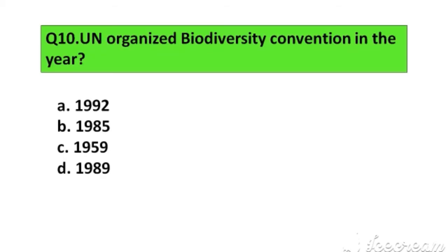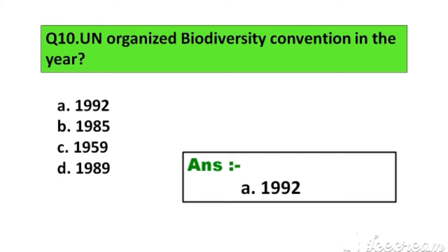Question number 10. UN organized biodiversity convention in the year: Option A. 1992, B. 1985, C. 1959, D. 1989. The right answer is Option A. 1992.